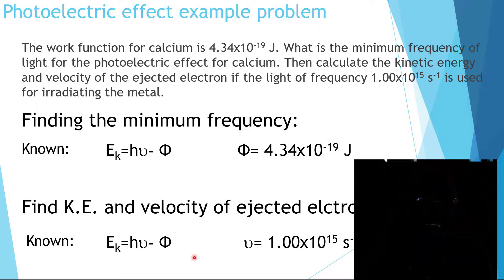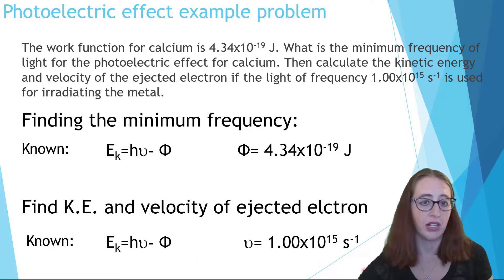The second part of the problem used our new frequency and the work function that was given in the problem in order to solve for the kinetic energy of the ejected electron. We then used the kinetic energy equals 1/2 m v squared to solve for the velocity.